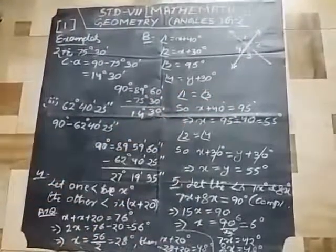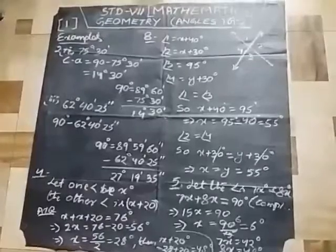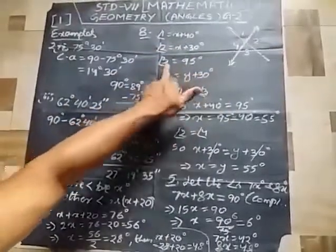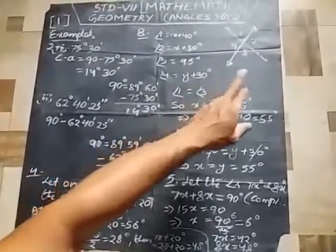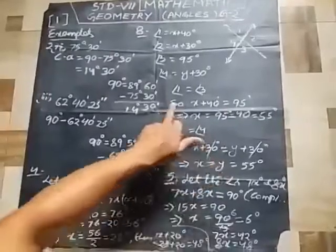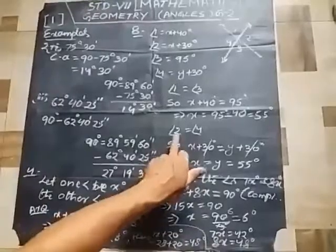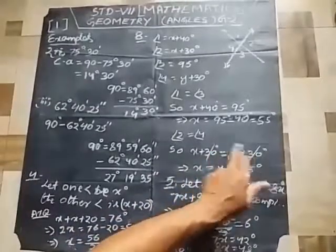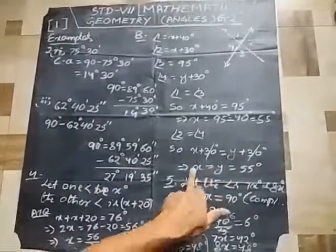Example 8: Find the value of x and y in the figure. The angles labeled are: angle 1 = x+40°, angle 2 = x+30°, angle 3 = x+30°, and angle 4 = 95°. Using vertically opposite angles: angle 1 equals 95 degrees, so x+40 = 95, giving x = 55 degrees. For angle 2: x+30 = y+30, the 30s cancel, so x equals y. Since x is 55 degrees, y is also 55 degrees.